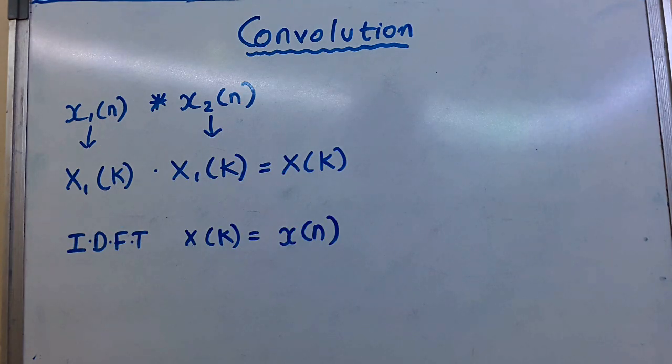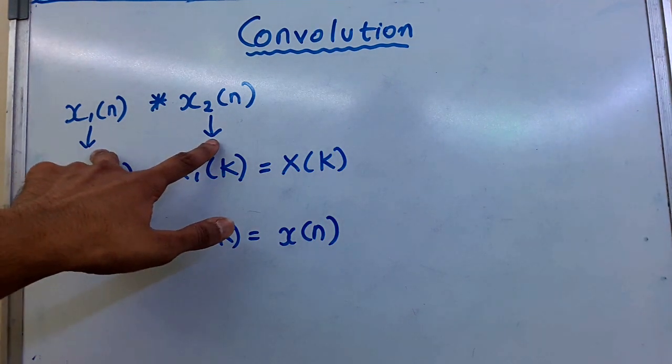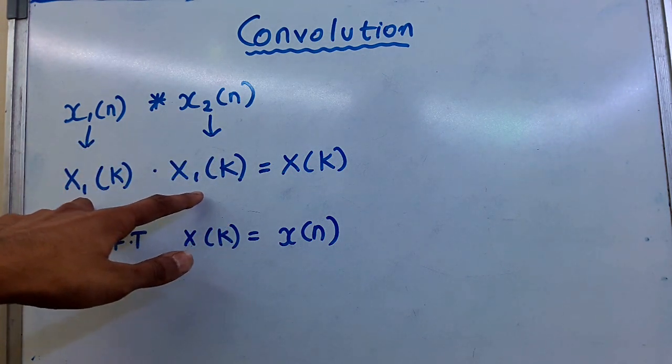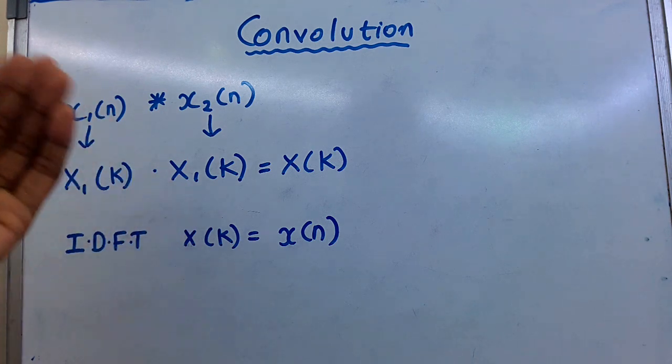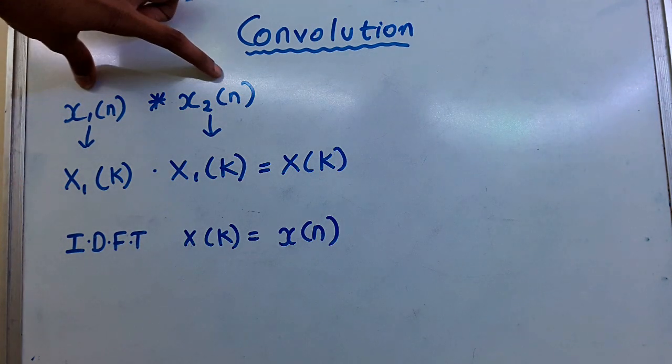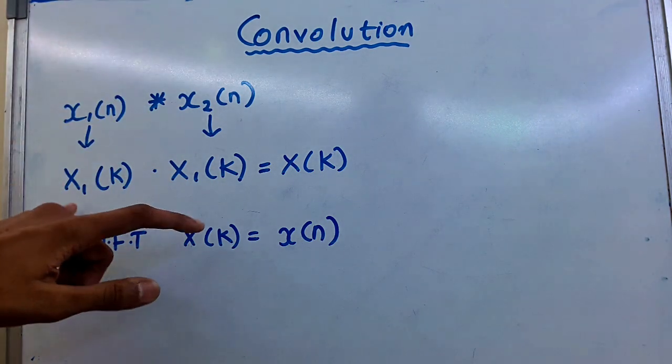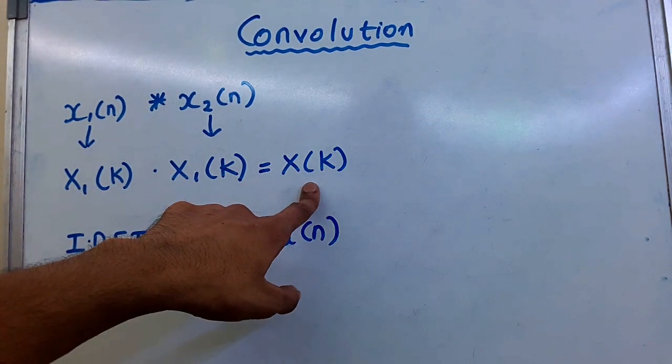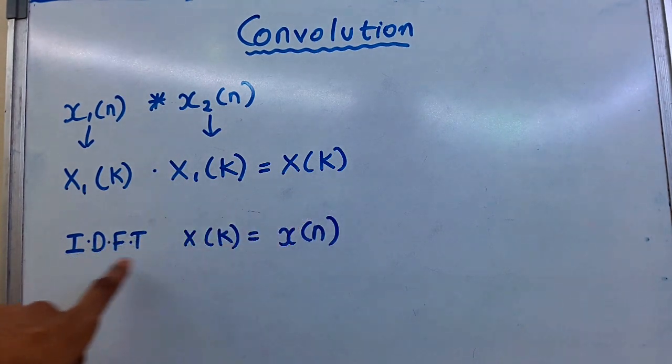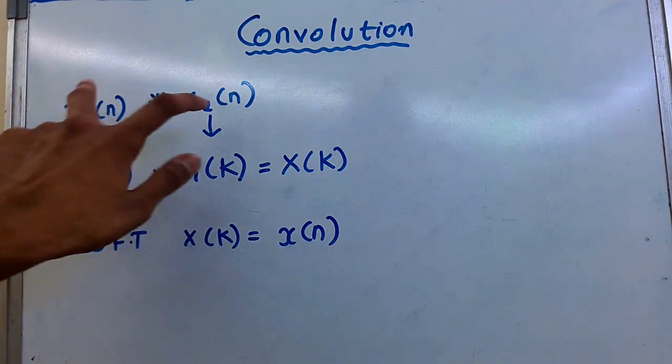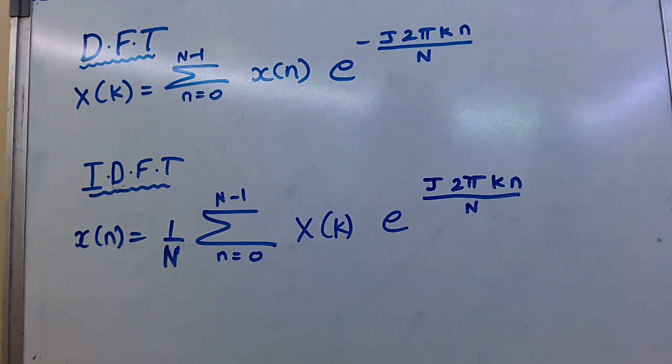Next property is convolution. Convolution property states that if we want to convolve two samples in time domain, in frequency domain those two samples simply multiply. Using discrete Fourier transform, we have these two samples to convolve. First, we take DFT of both individually, then simply multiply them to get x of k. Then we take IDFT to get the convolved value. That's it.